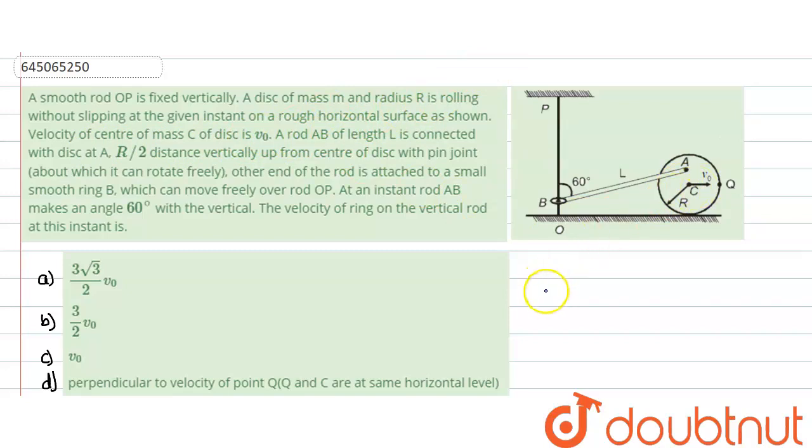Now since it is rolling without slipping, we can say that velocity of center of mass v₀ equals R times ω, if ω is the angular velocity.